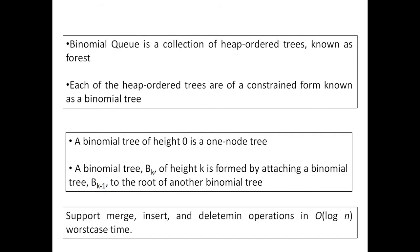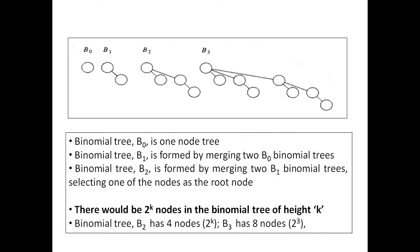It supports merge, insert and delete min operations in order of log n worst case time. This is an example for binomial heap. It is a collection of 4 different binomial trees namely v0, v1, v2 and v3.